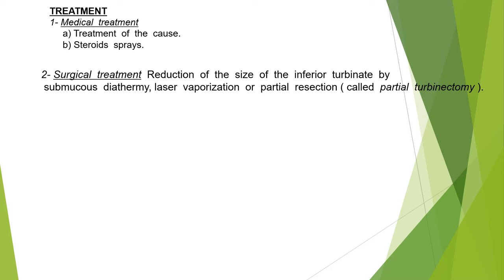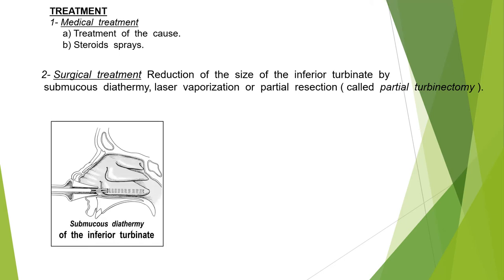How to treat hypertrophic rhinitis: medically, treat the cause and give local steroid sprays. If this doesn't work, proceed to surgical treatment by reduction of the size of the inferior turbinate by submucous diathermy, laser vaporization, or partial resection called partial turbinectomy.